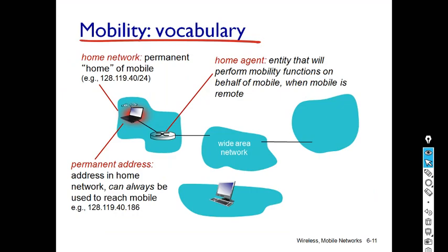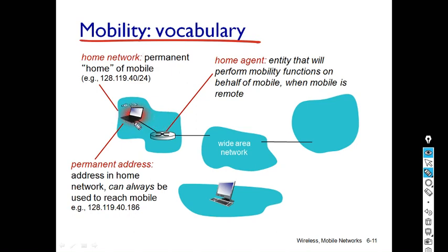Students will now see the different mobility vocabulary. You can see here the home network of the user, where there is a permanent address of the user. In this diagram we are using a laptop as a mobile node, so this is the permanent address of the home network.